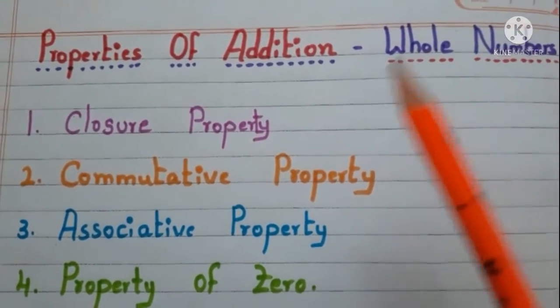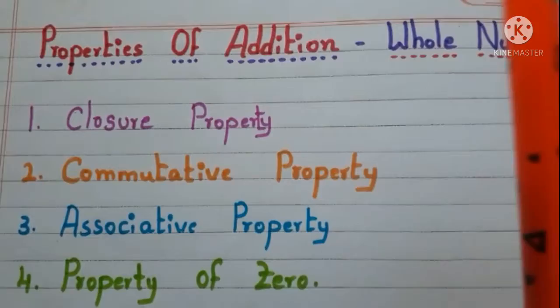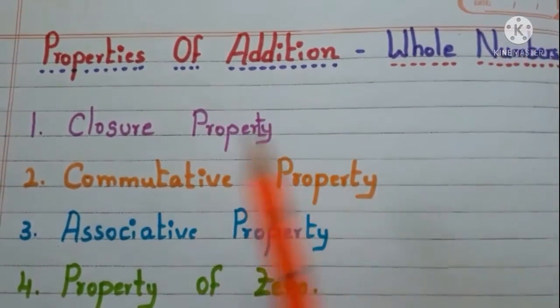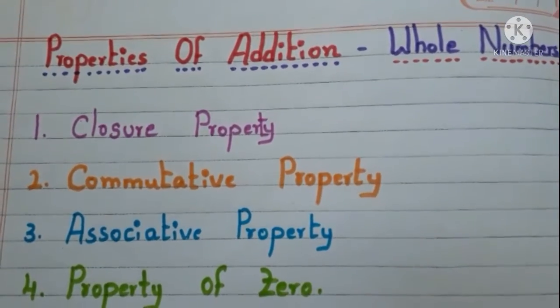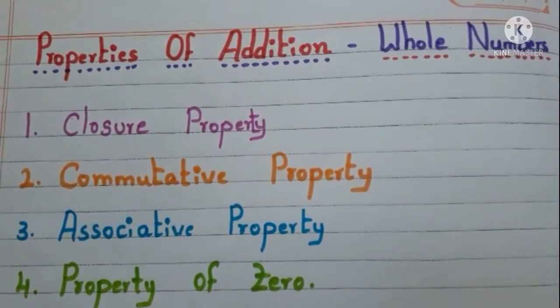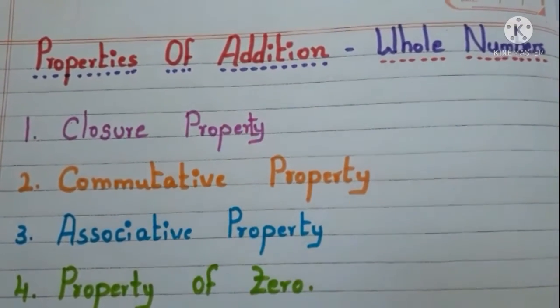We have four properties of addition. Those are closure property, commutative property, associative property and property of zero. First we start with closure property.